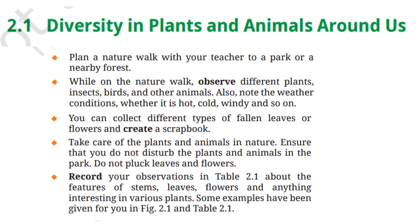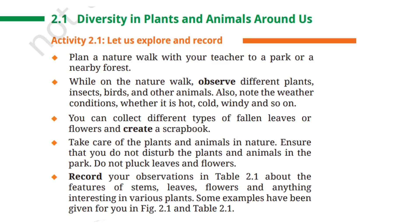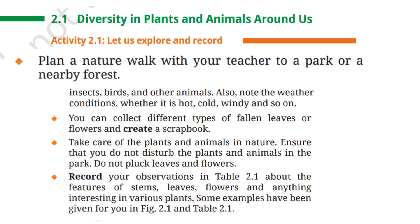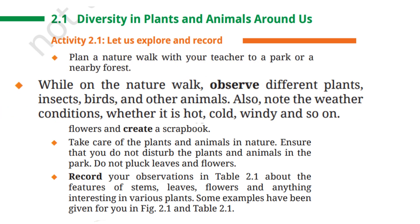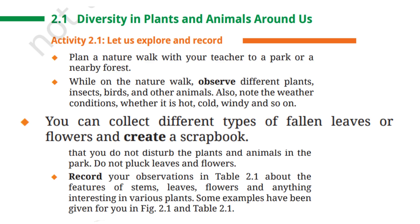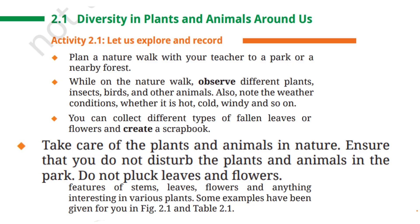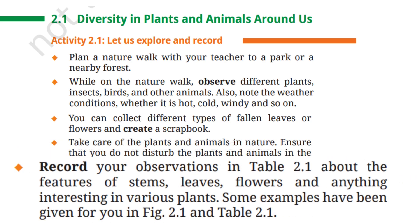Now we will study diversity in plants and animals around us. Activity 2.1: Let us explore and record. Plan a nature walk with your teacher to a park or a nearby forest. Observe different plants, insects, birds and other animals, and note the weather conditions — whether it is hot, cold, windy and so on. You can collect fallen leaves or flowers and create a scrapbook. Take care not to disturb the plants and animals; do not pluck leaves and flowers. Record your observations in table 2.1 about the features of stems, leaves, flowers and anything interesting in various plants. Examples are given in figure 2.1 and table 2.1.